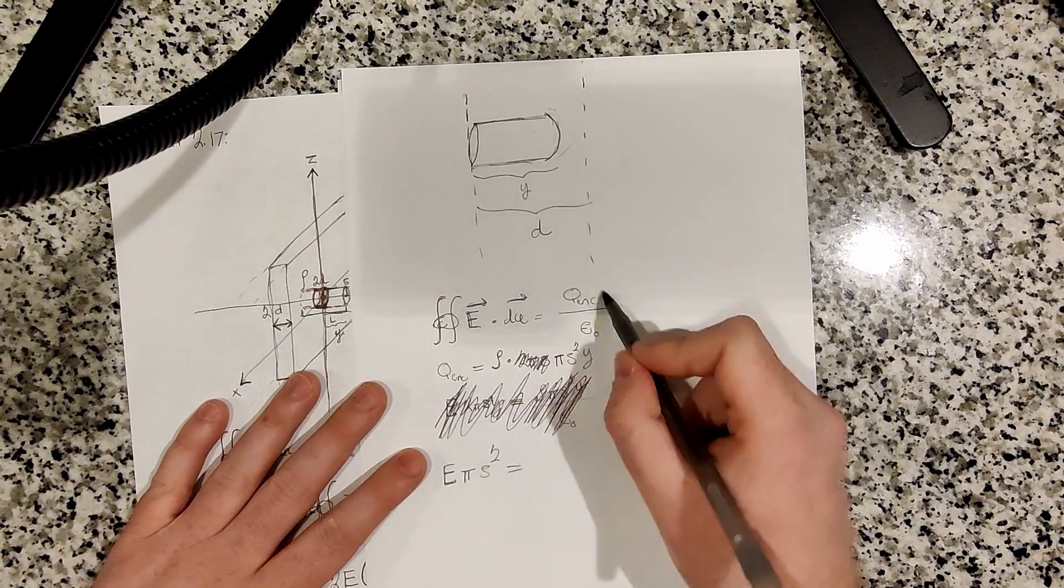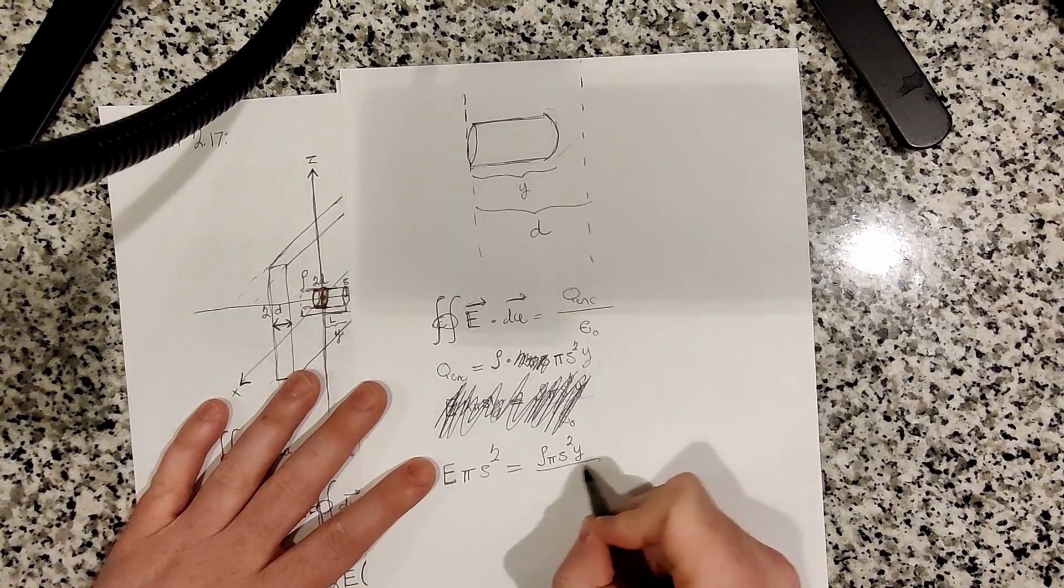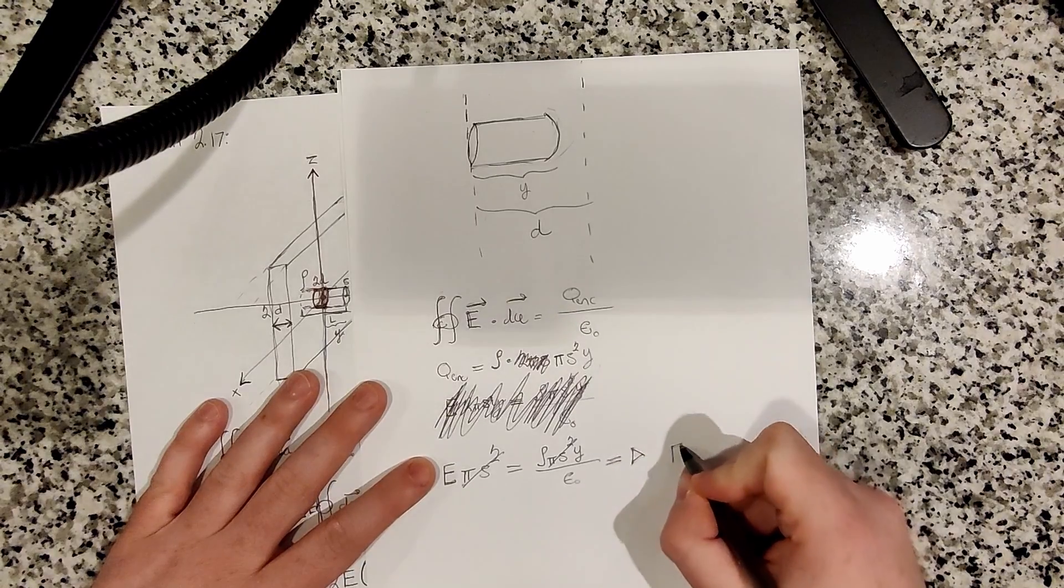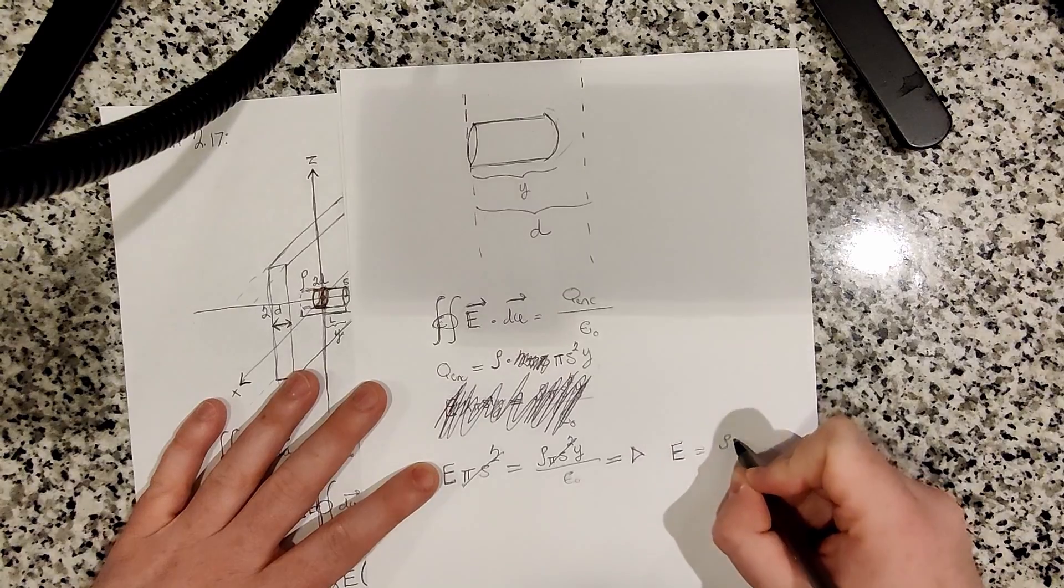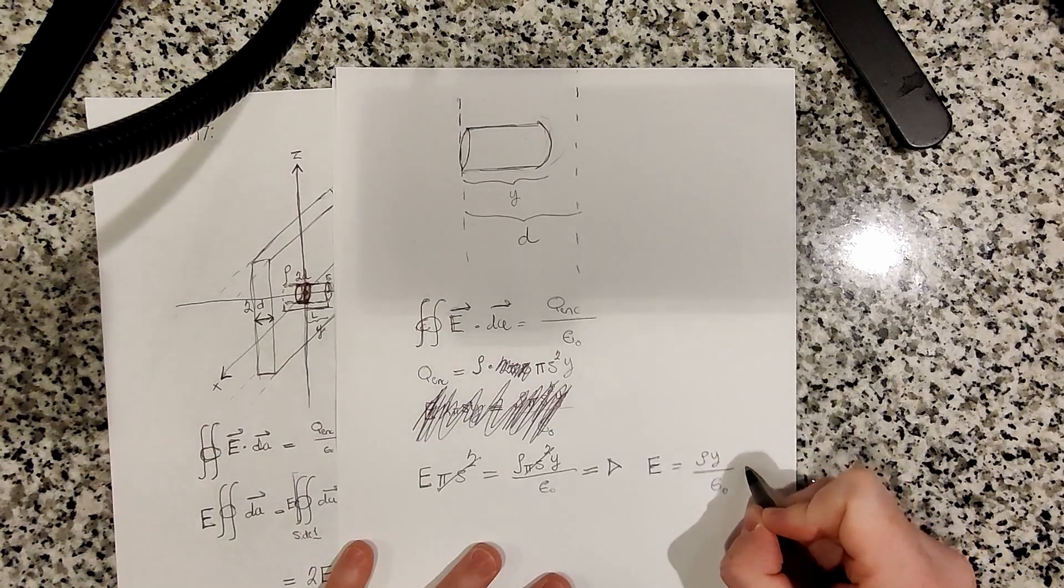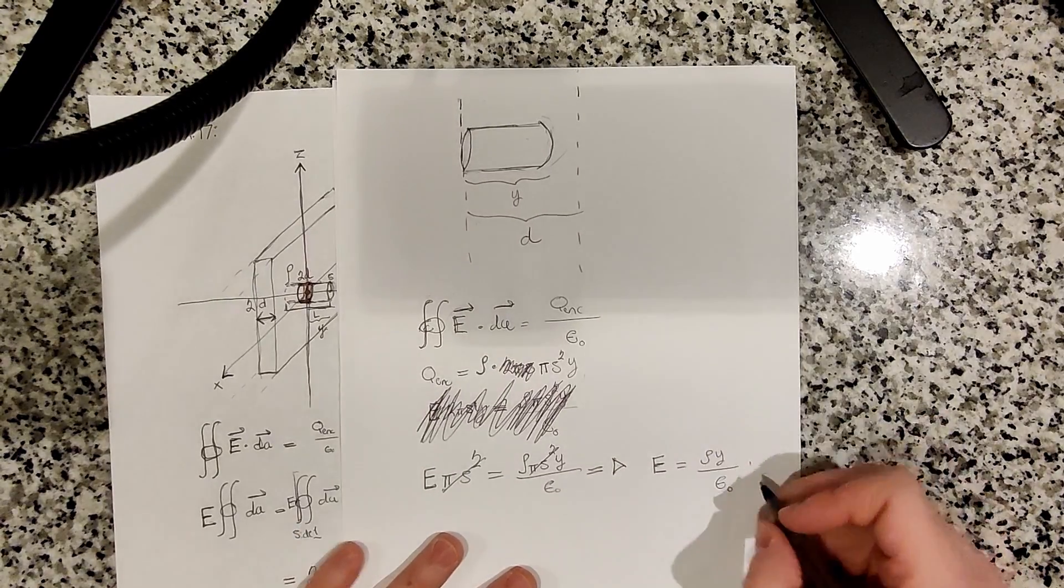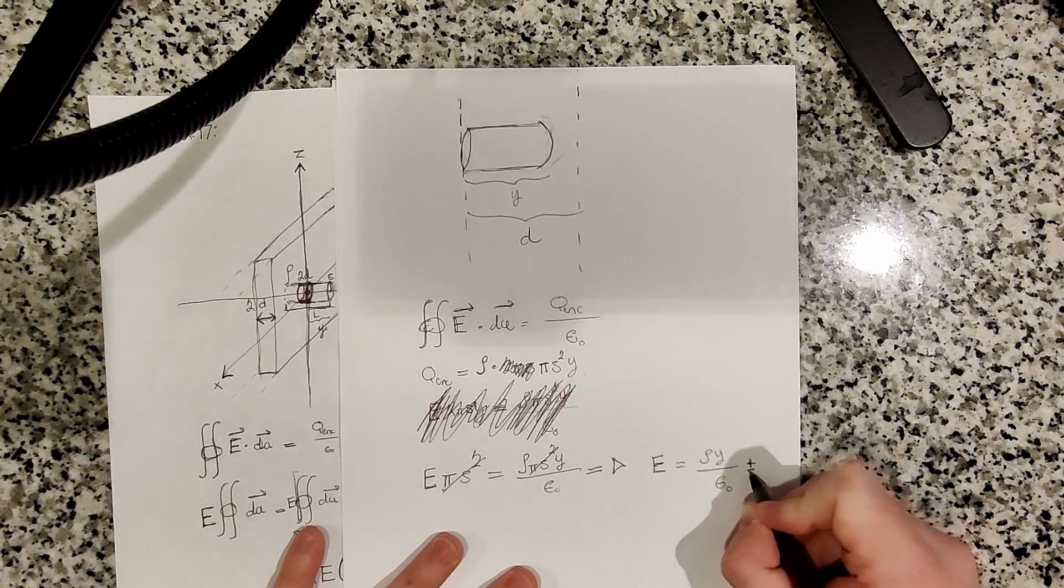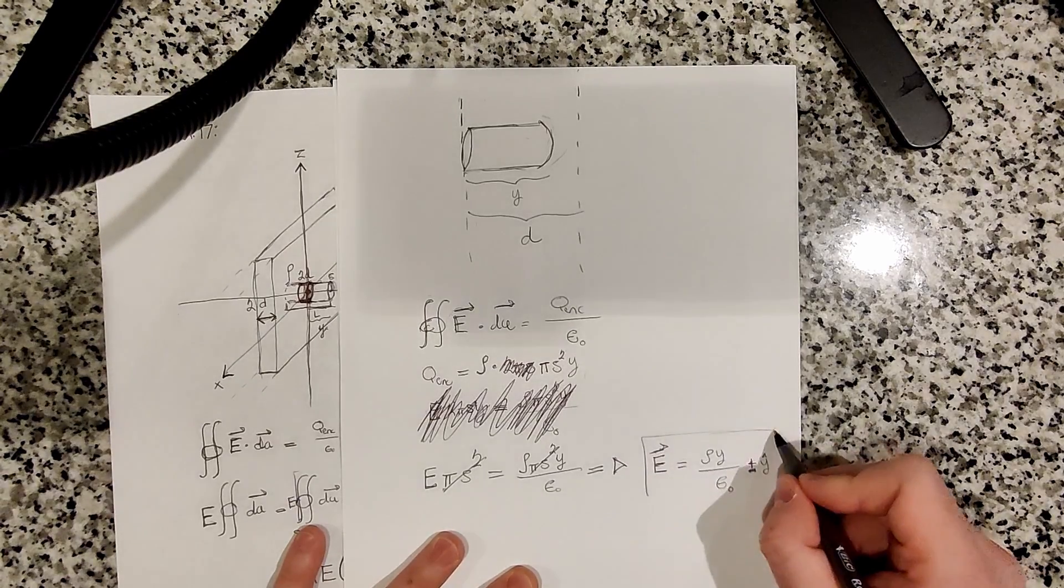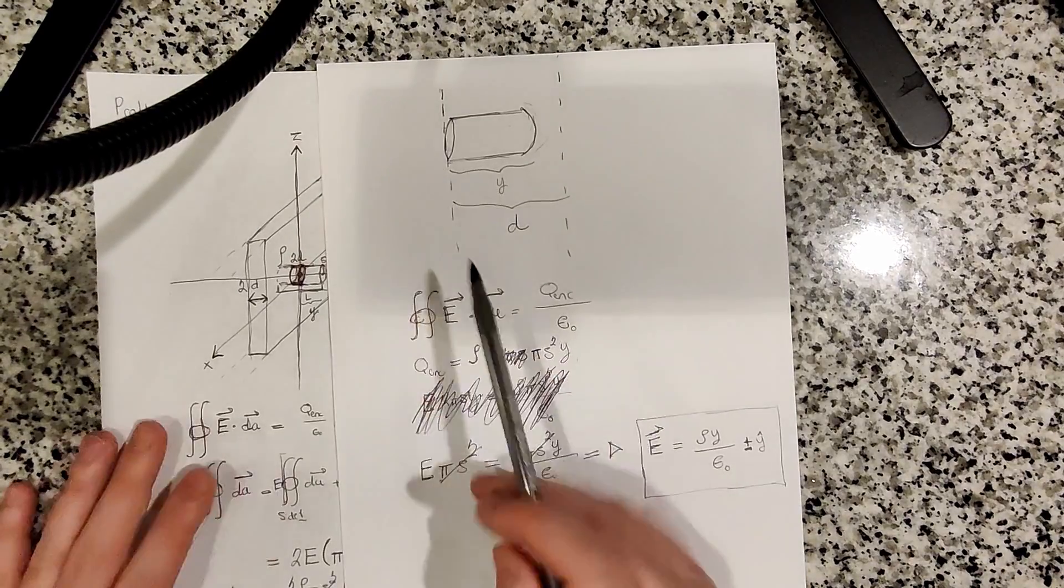This equals q enclosed, which is rho pi s squared y divided by epsilon naught. Canceling pi s squared, we find that the electric field equals rho y over epsilon naught. It could be in the positive y direction or the minus y direction, so plus or minus y hat, depending on which way the electric vector is pointing. So that's inside the slab.